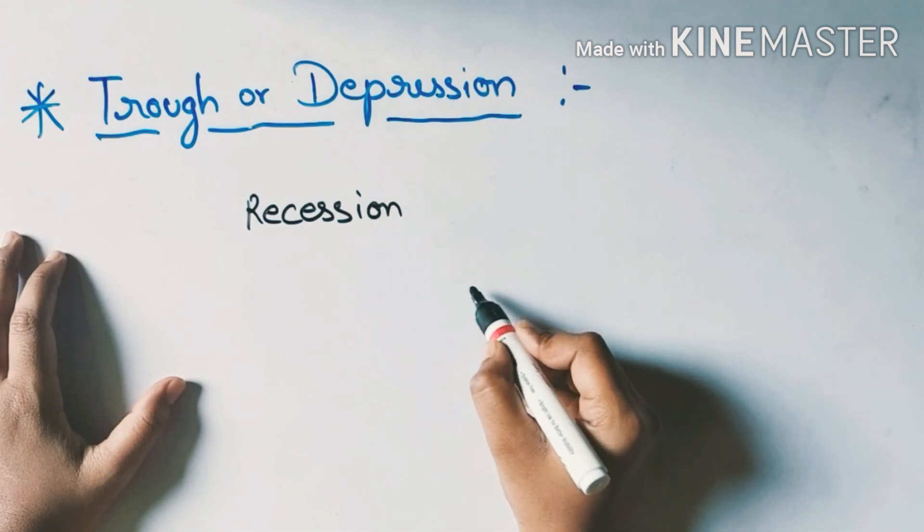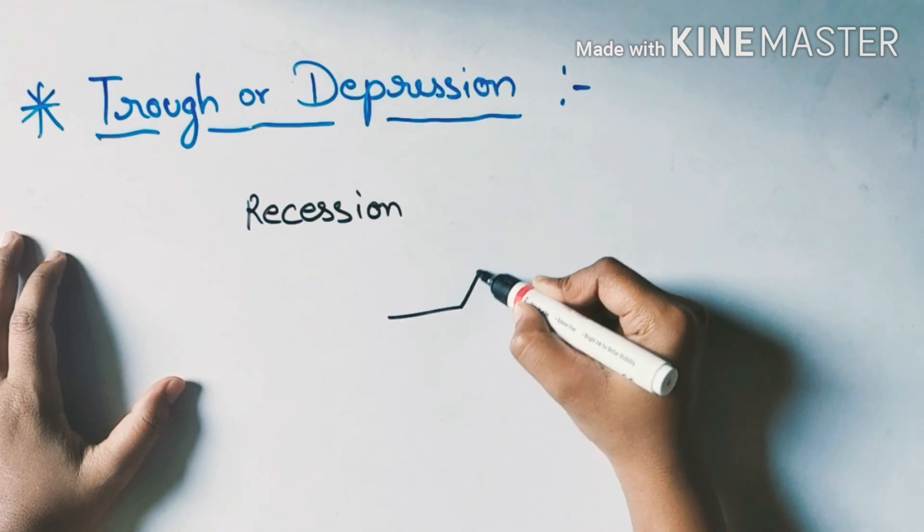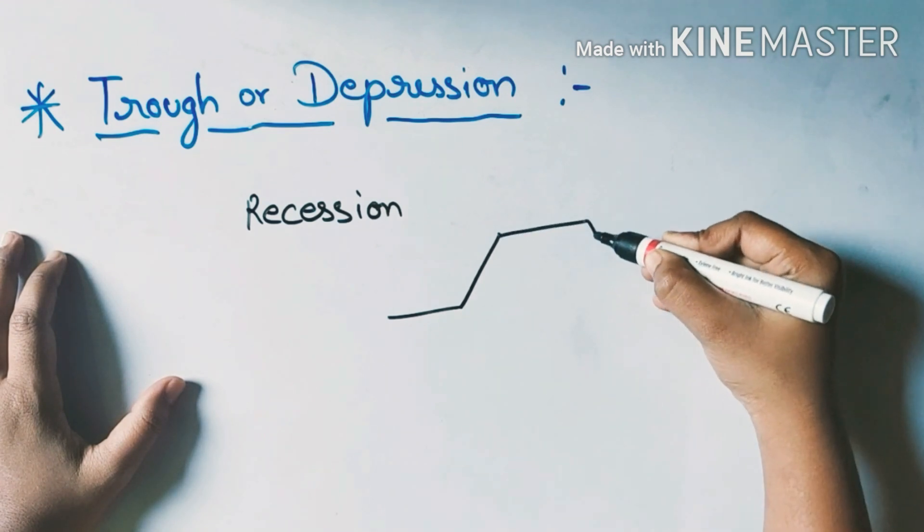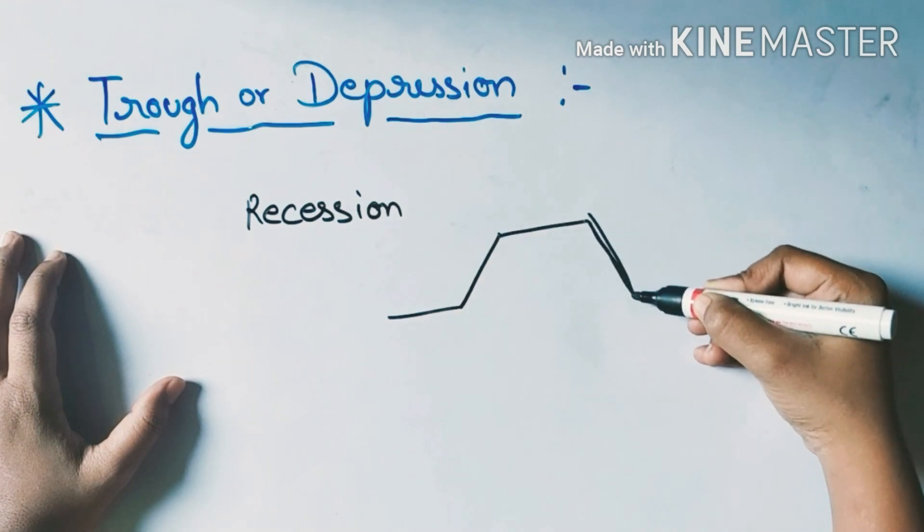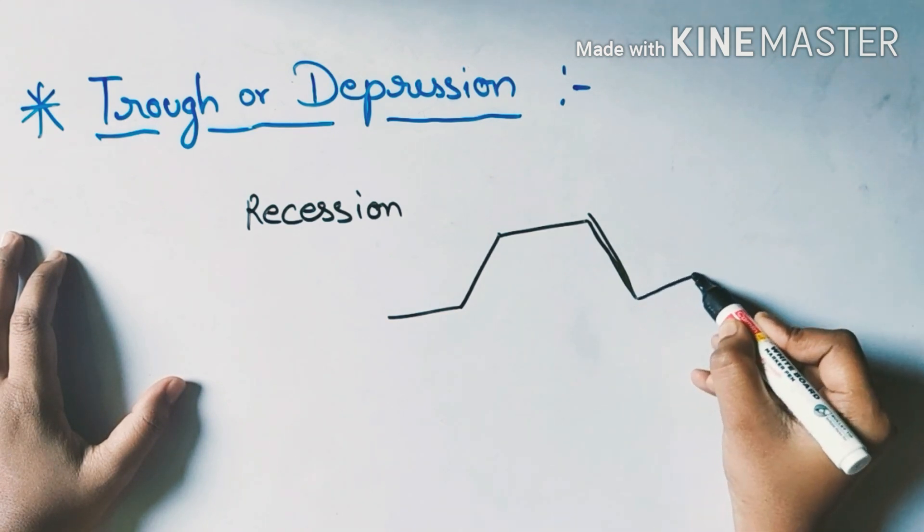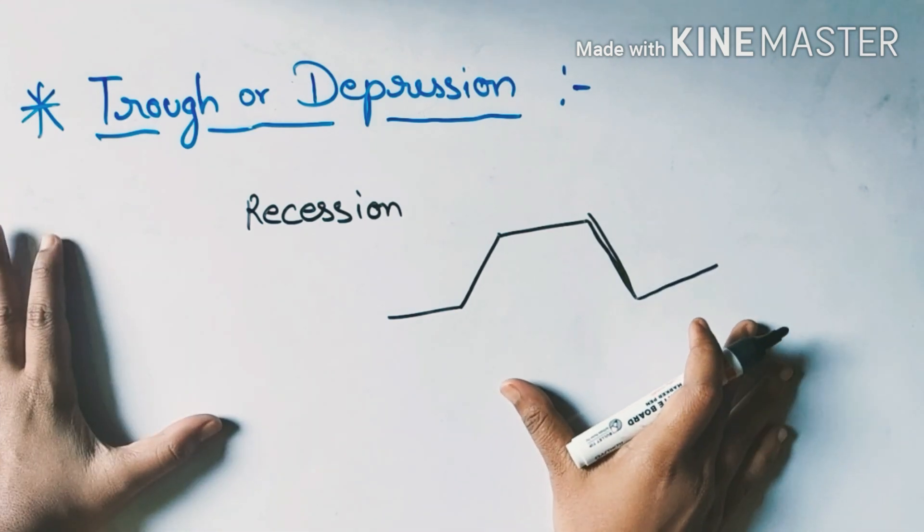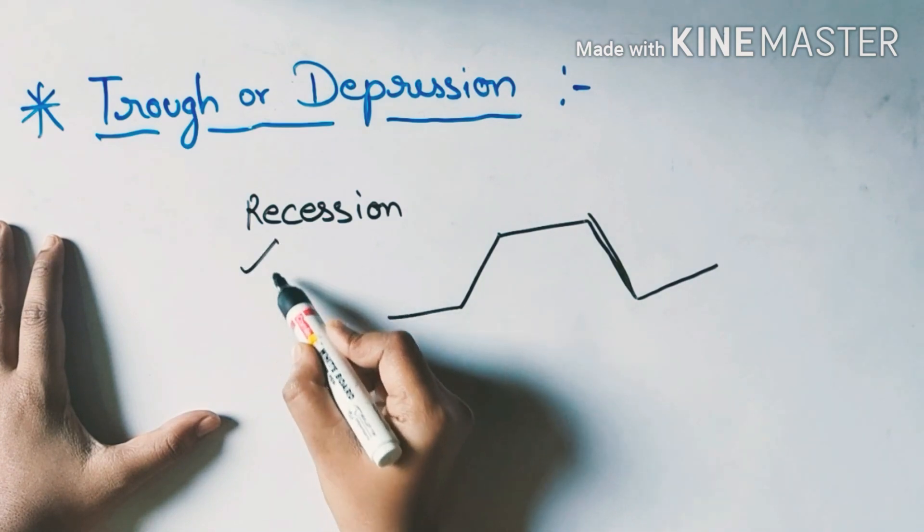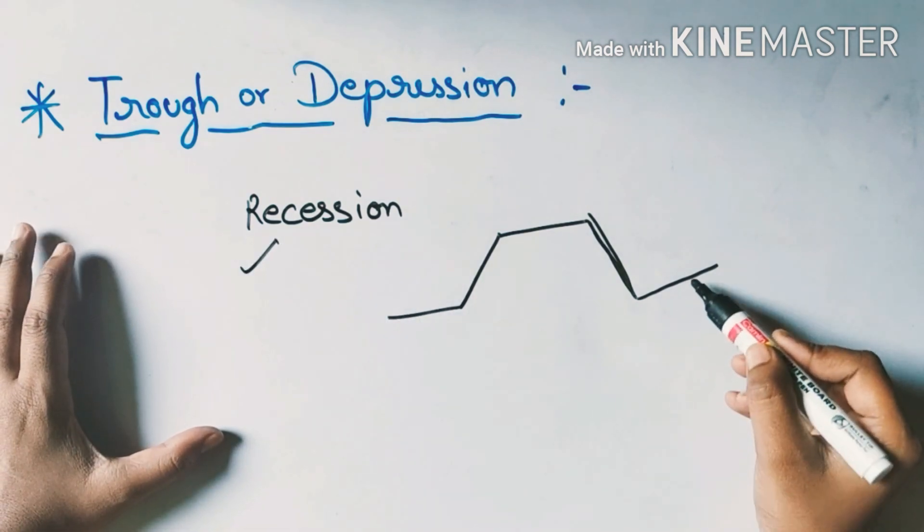It is nothing but contraction. The recession, this recession in its severe form, is trough. The first point is that the severe form of recession is nothing but a trough.